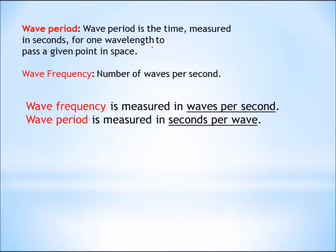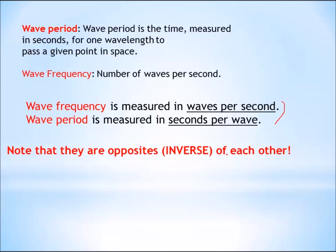Now look at these two. One of the things that you notice is that there is a very interesting relationship between them. Wave frequency is measured in waves per second, and wave period is measured in seconds per wave. They are opposites — or inverses — of each other. And since they're inverses of each other, if you know one of these, the frequency or the period, you can calculate the other.